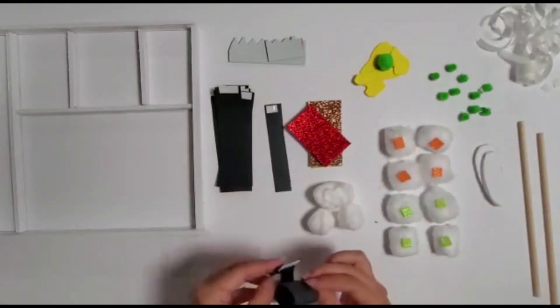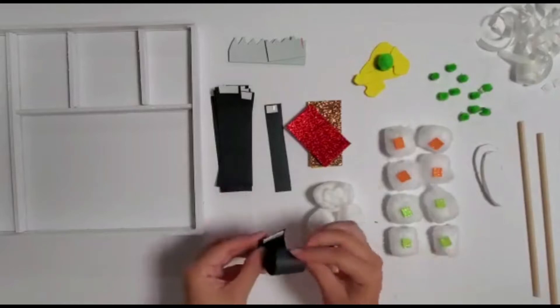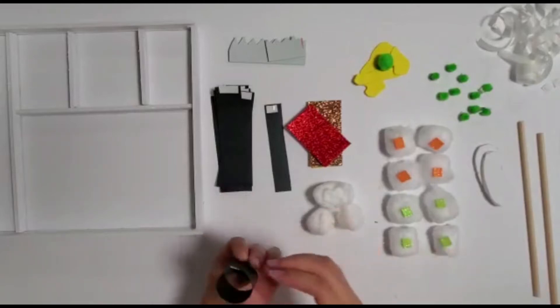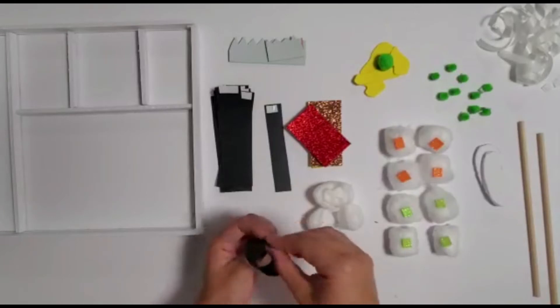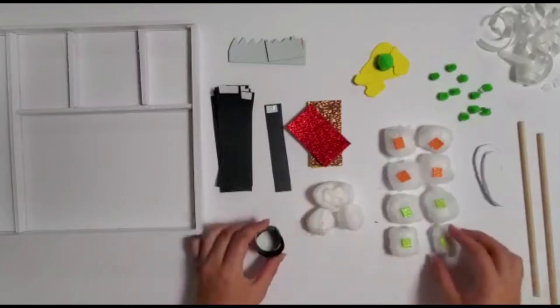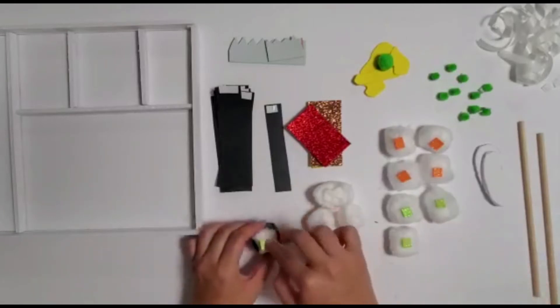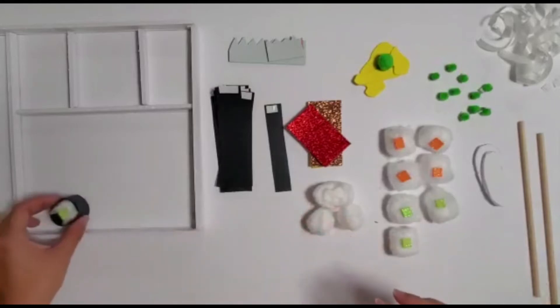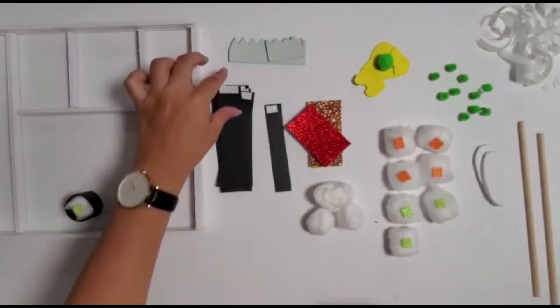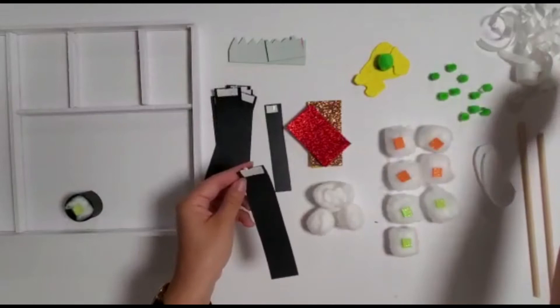Roll the two ends of the paper towards each other to create a small tube and put a cotton ball inside the tube. Repeat to make eight total maki sushi rolls.